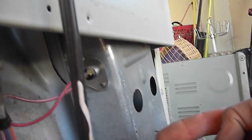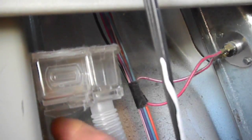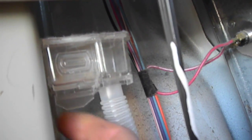Also remember to check this high limit here. It should have continuity right between those two terminals as well. And again, make sure that the unit is unplugged. This has a breather port in case the lint filter gets plugged up and nobody changes it.